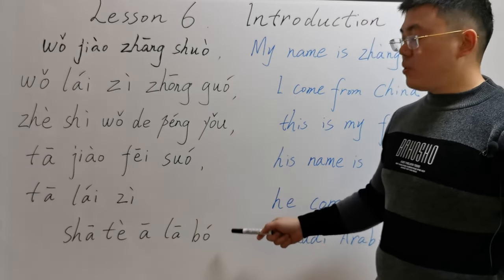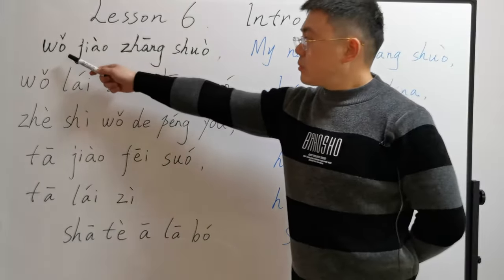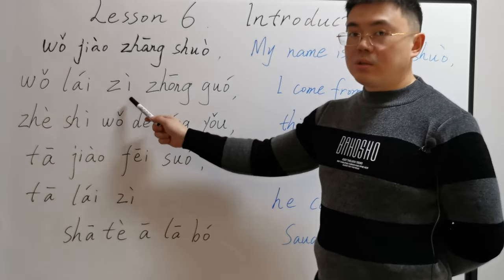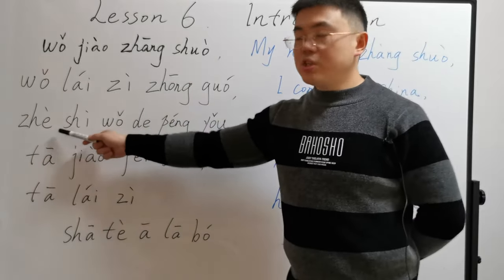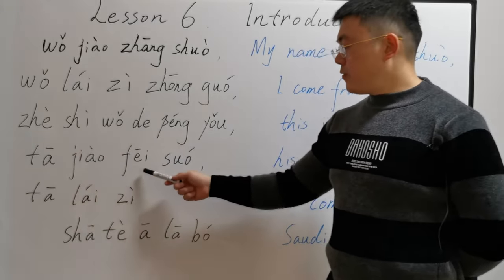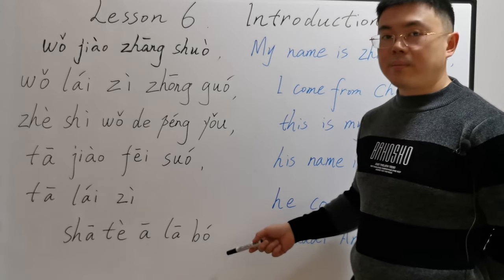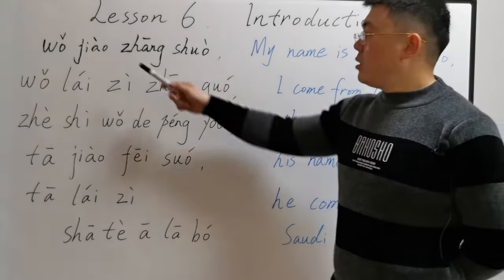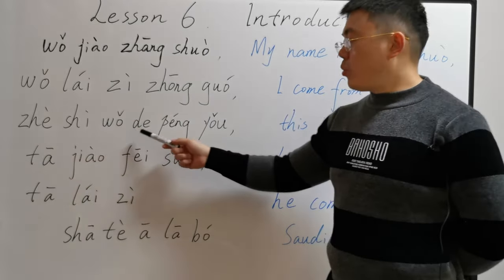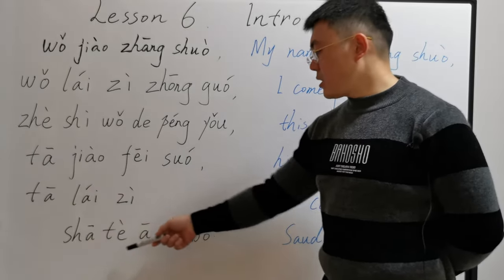Let's practice all these sentences all over again. Please repeat after me, slowly: 我叫张朔。我来自中国。这是我的朋友。他叫菲索。他来自沙特阿拉伯。Quickly: 我叫张朔。我来自中国。这是我的朋友。他叫菲索。他来自沙特阿拉伯。